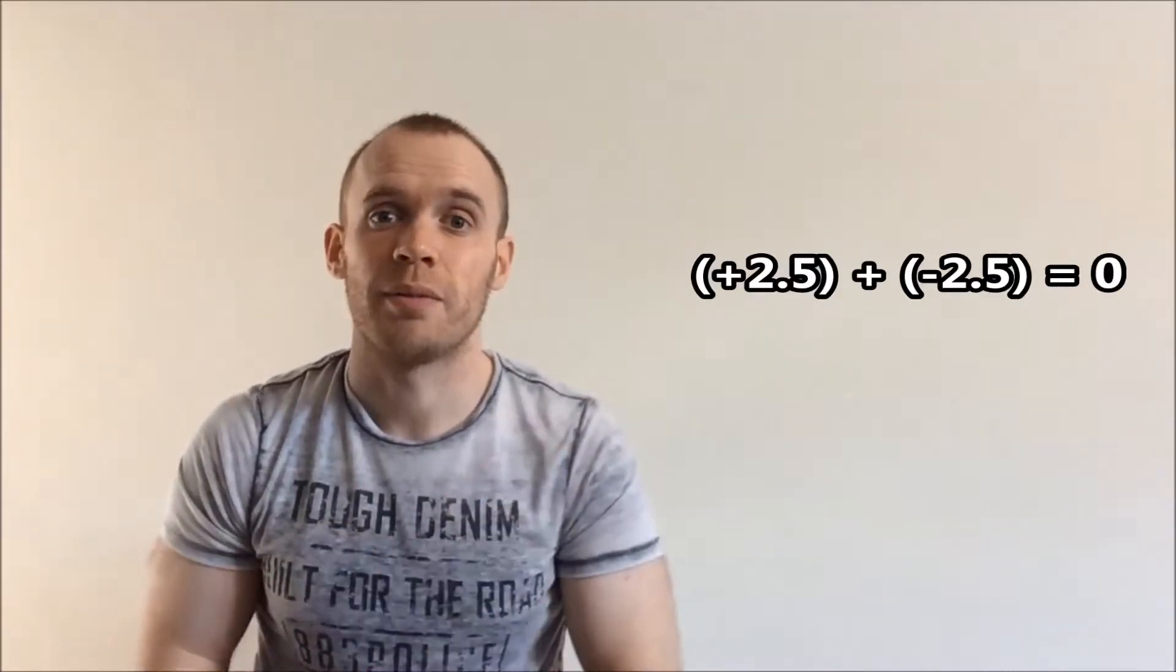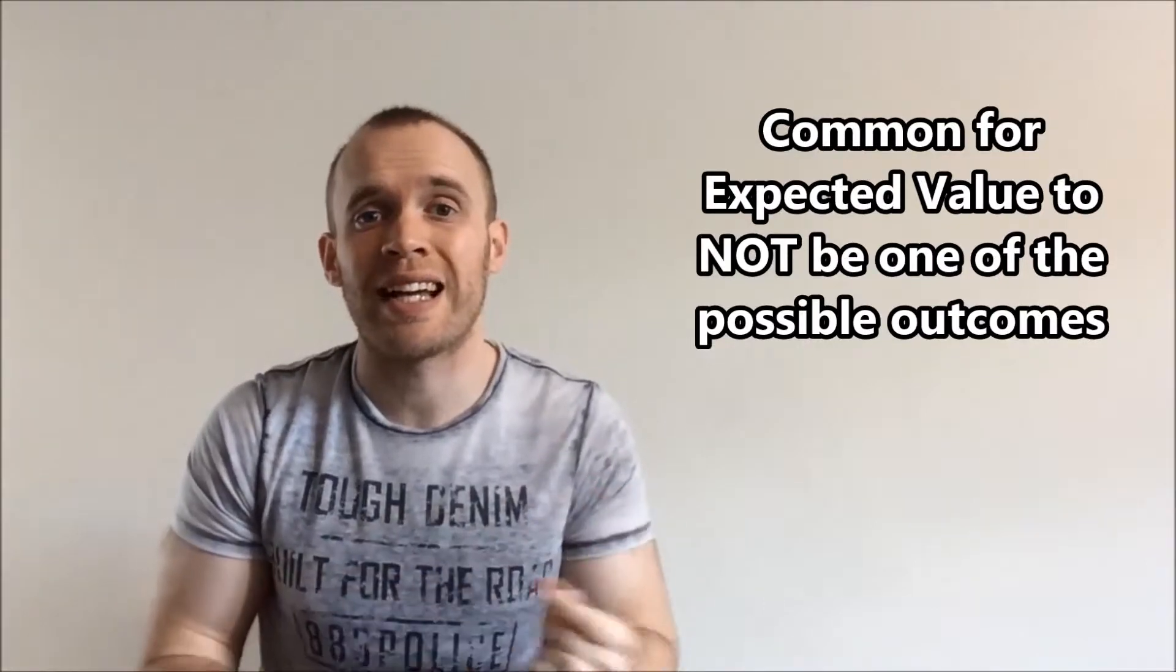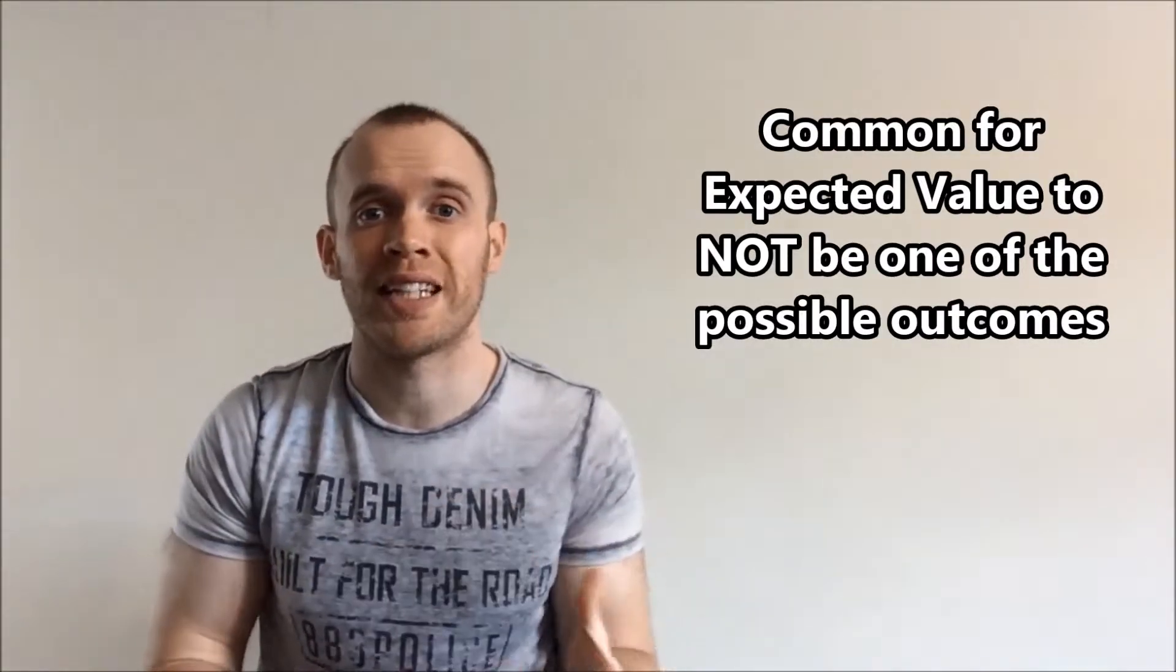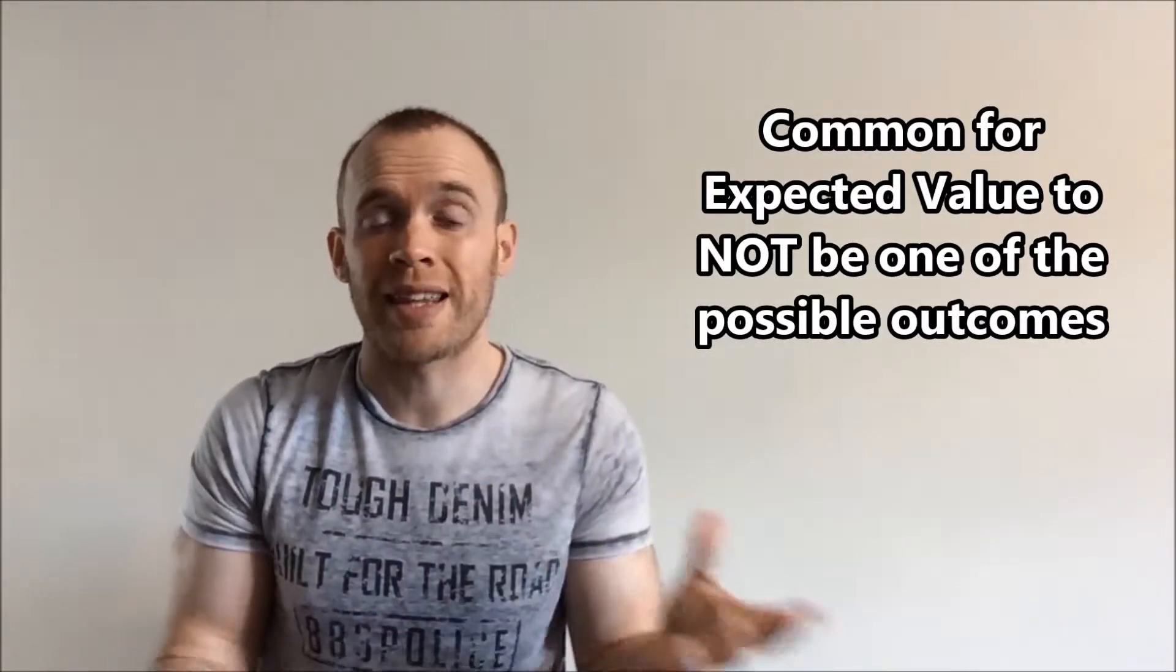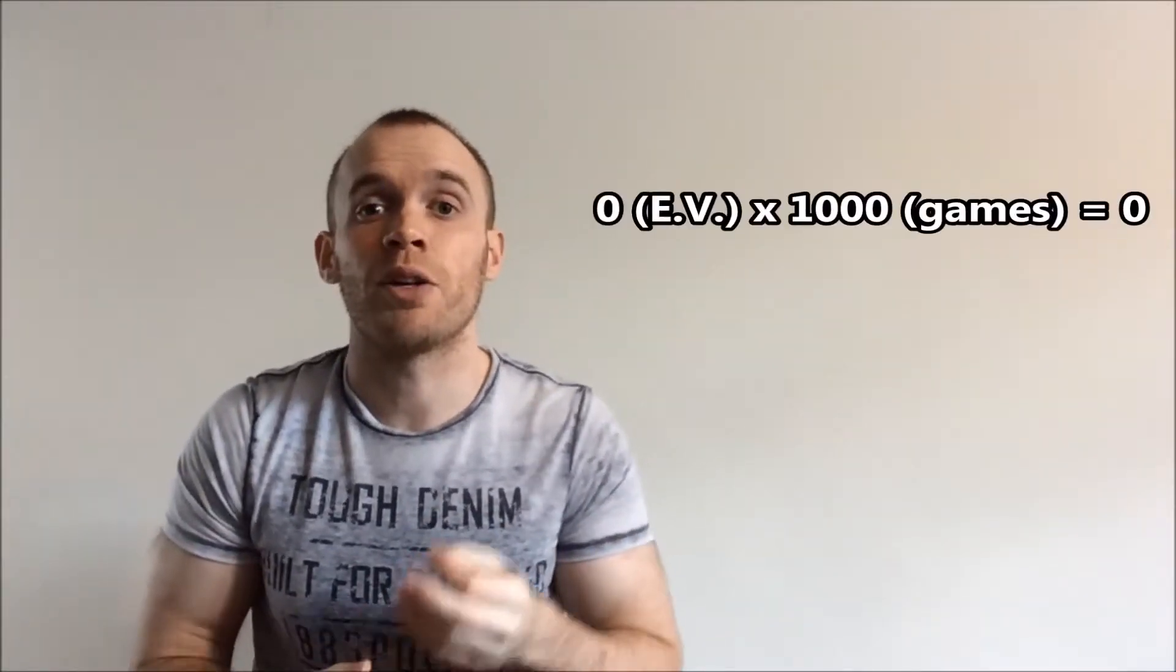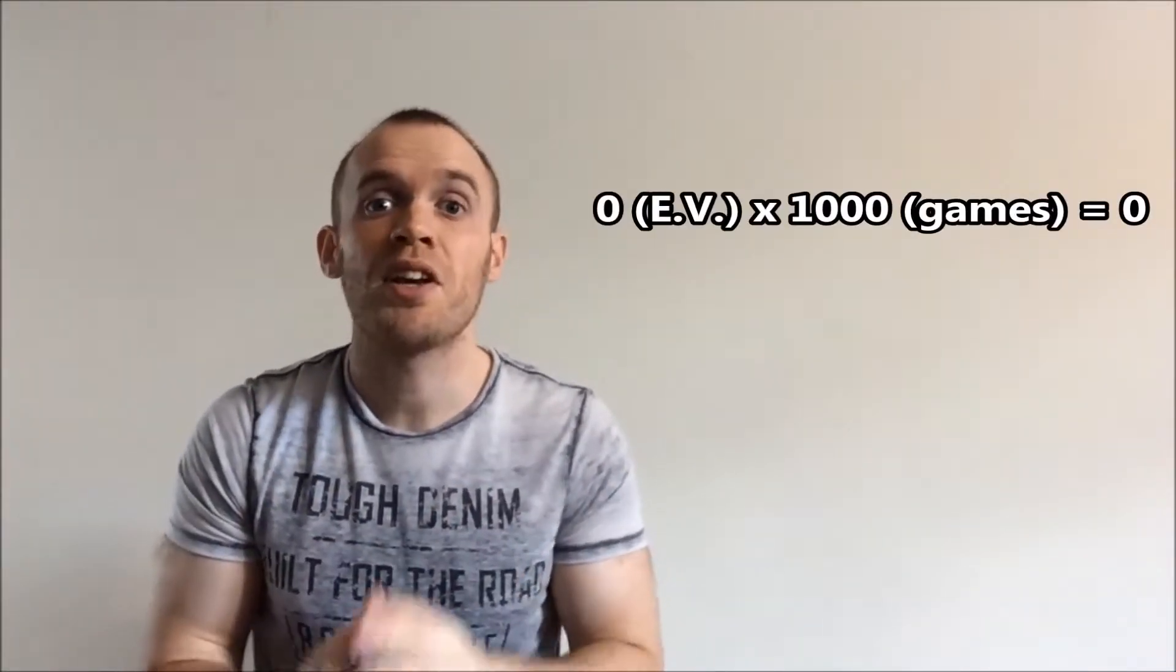It's easy to see that when we add up the outcomes, the expected value is zero. Now in reality we can't get zero - the only outcomes are plus five or minus five, and it's often the case that you can't get the exact expected value from playing a single game. If we were to play a thousand times, the odds say that we should win 500 times and lose 500 times, and then we'll be back where we started.